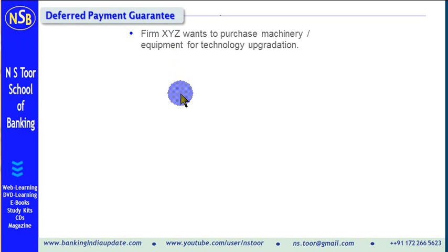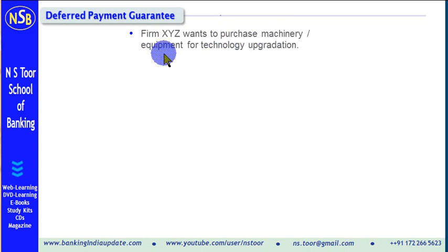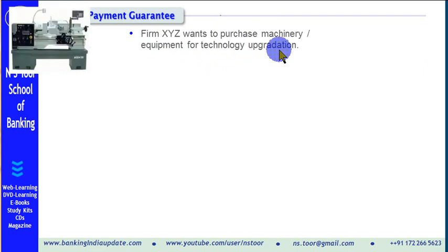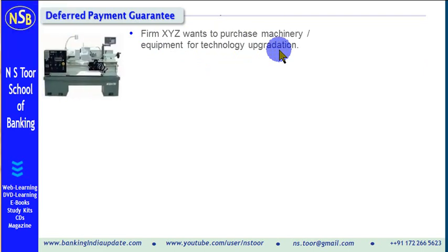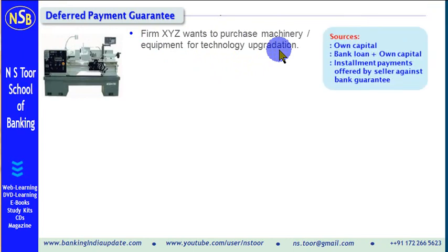Friends, just imagine firm XYZ wants to purchase some machinery or some equipment for technology upgradation. What could be the possible sources for purchase of such machinery or such equipment?